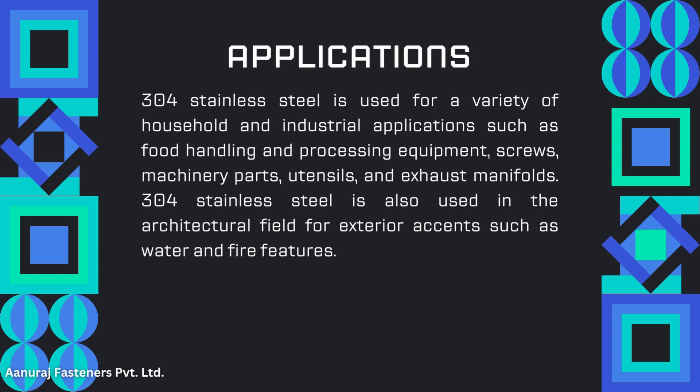304 stainless steel is used for a variety of harsh service and industrial applications such as food handling and processing equipment, screws, machinery parts, utensils, and exhaust manifolds. Stainless steel 304 is also used in the architecture field for aesthetic features such as water and fire features.